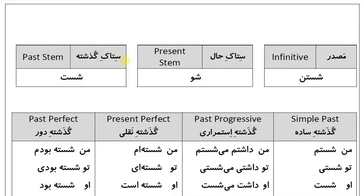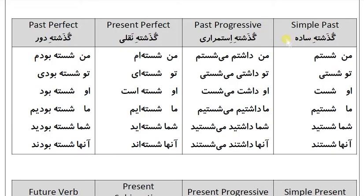گذشته ساده (Simple past): من شستم، تو شستی، او شست، ما شستیم، شما شستید، آن‌ها شستند. گذشته استمراری (Past progressive): من داشتم می‌شستم، تو داشتی می‌شستی، او داشت می‌شست، ما داشتیم می‌شستیم، شما داشتید می‌شستید.